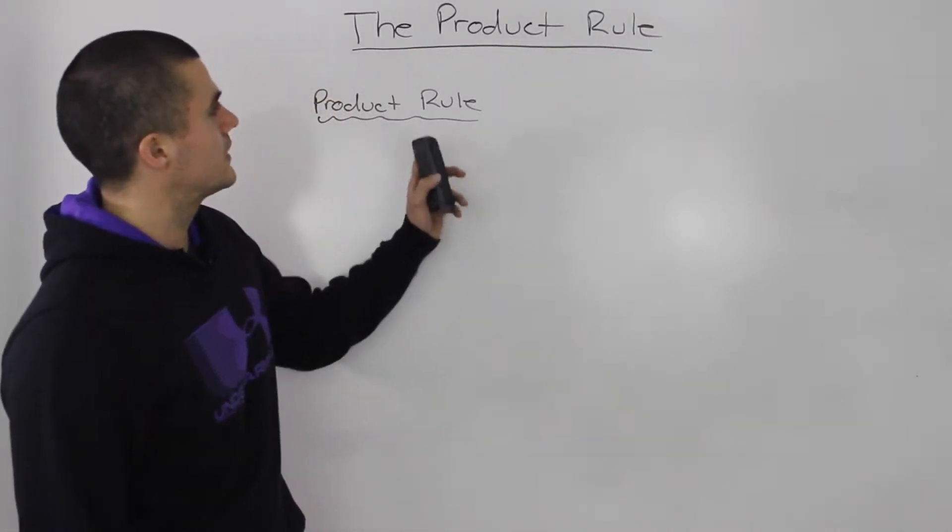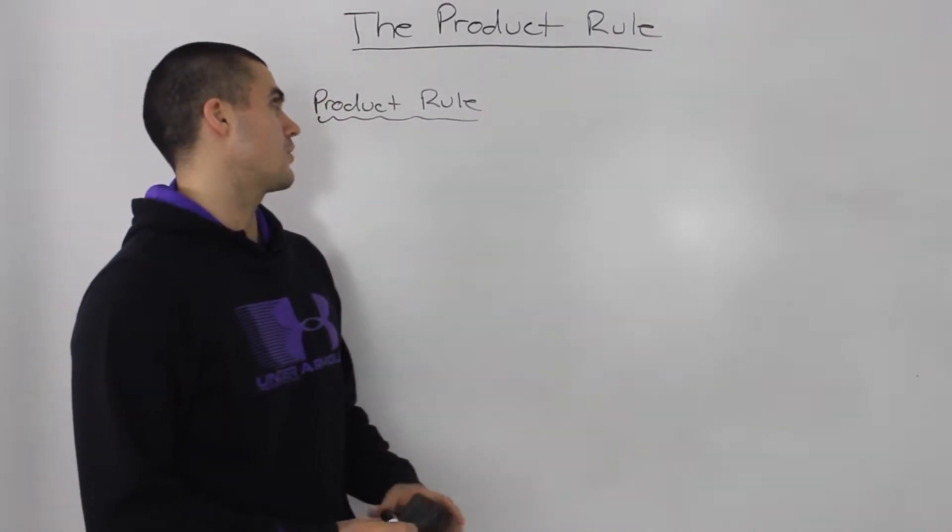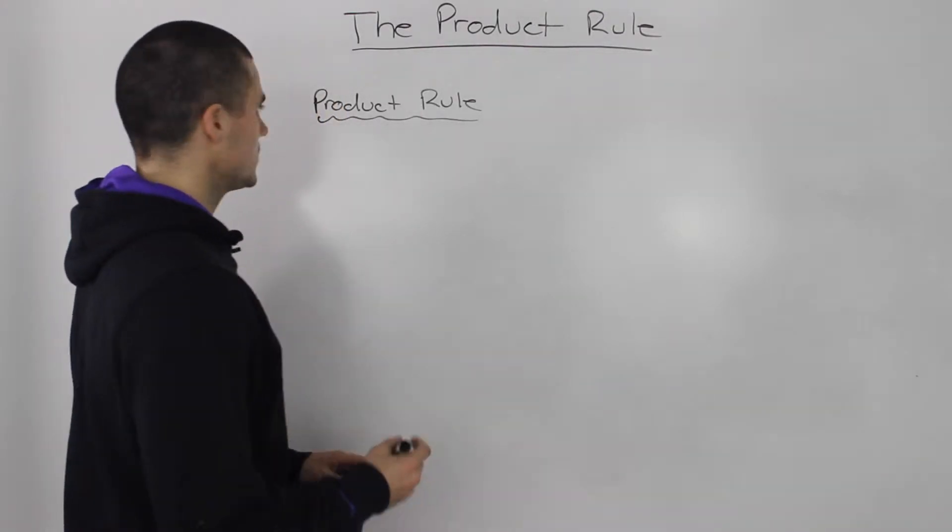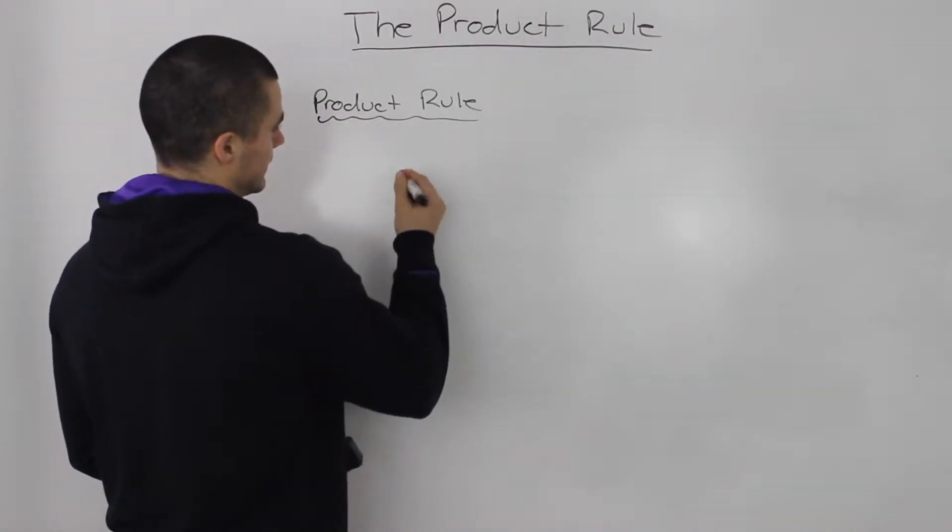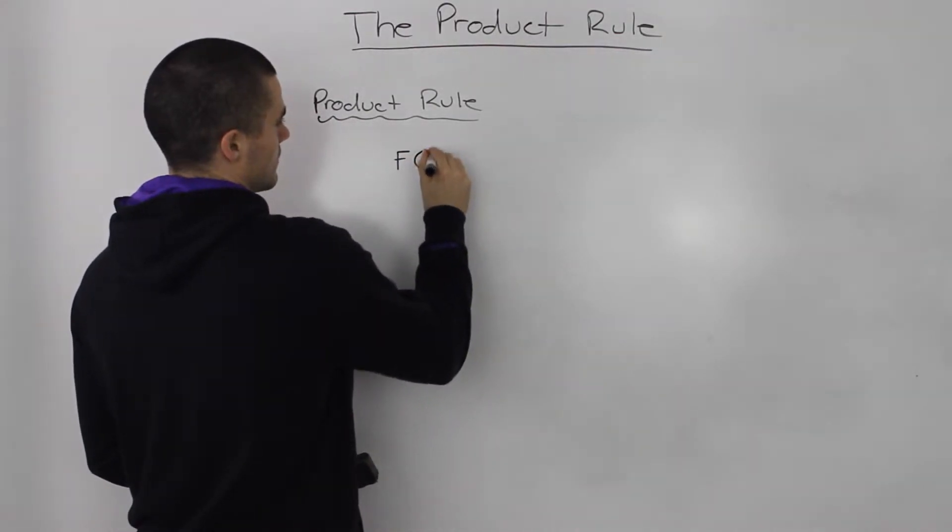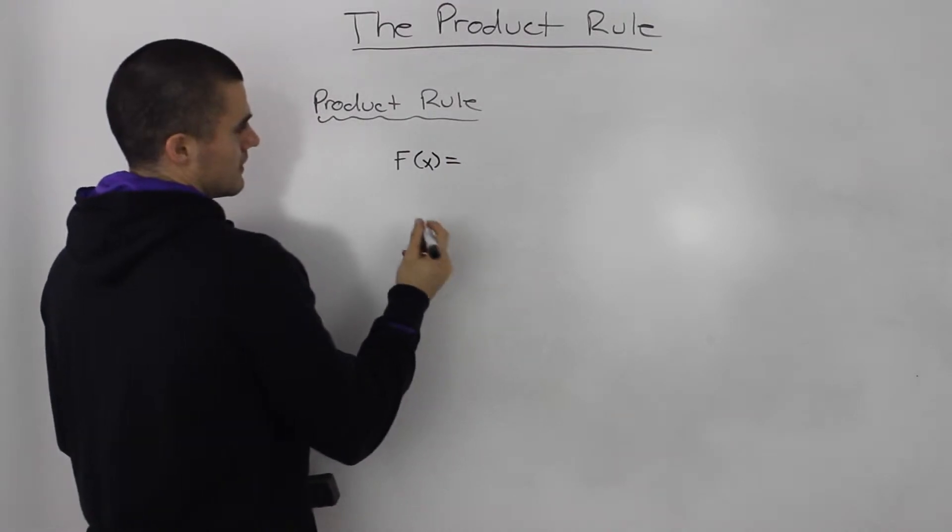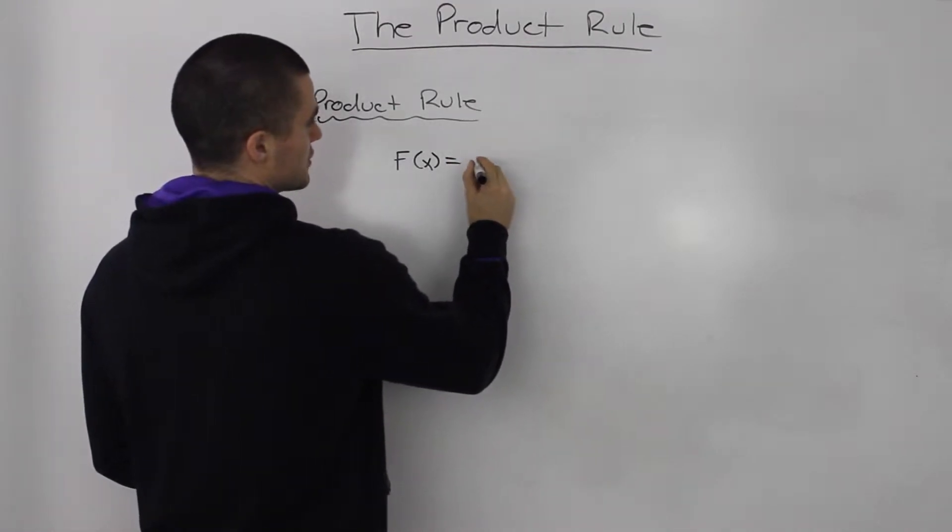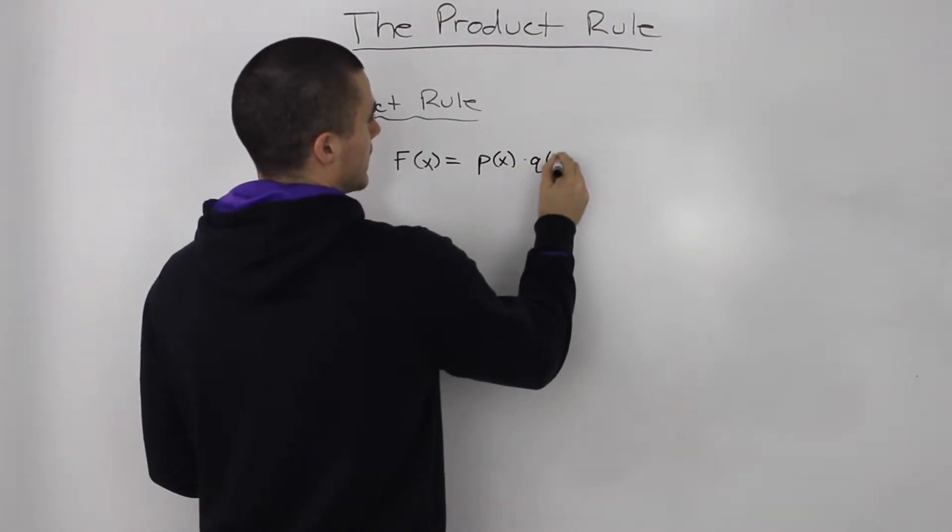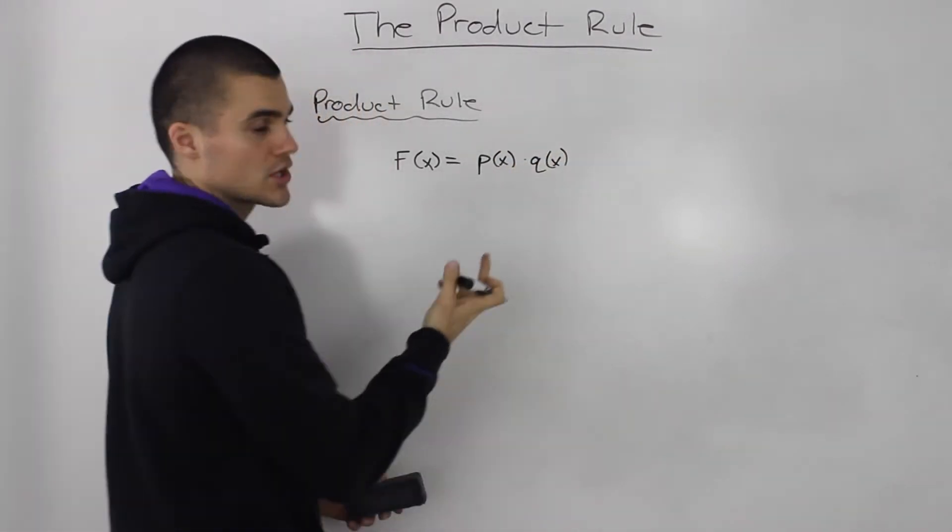Alright, moving on to the next section, we're now going to be talking about the product rule. And what the product rule is, is basically if you have a function in terms of two separate functions that are multiplied together, that are a product of each other,